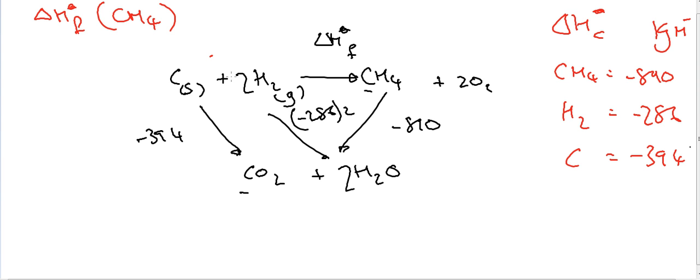So what's my calculation going to be? I'm going, let's switch to green. I'm moving from this side. I'm going away to there. So, to me, I've got minus 394. I've got two lots of minus 286. And that's the combustion of carbon and the hydrogen.